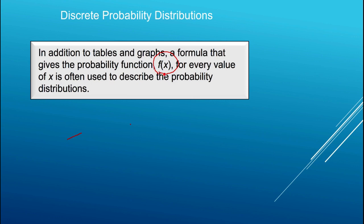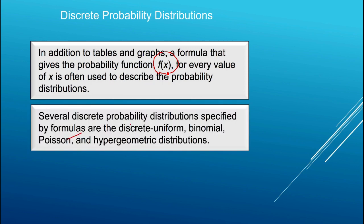It was necessary that we tabulate every possible value that x could take on and then enumerate its relative frequency. That's not always necessary. Oftentimes we can use formulas to describe the probability function for a discrete random variable, rather than having to tabulate all the possible values and calculate the relative frequencies. There are several important discrete probability distributions that have this property.